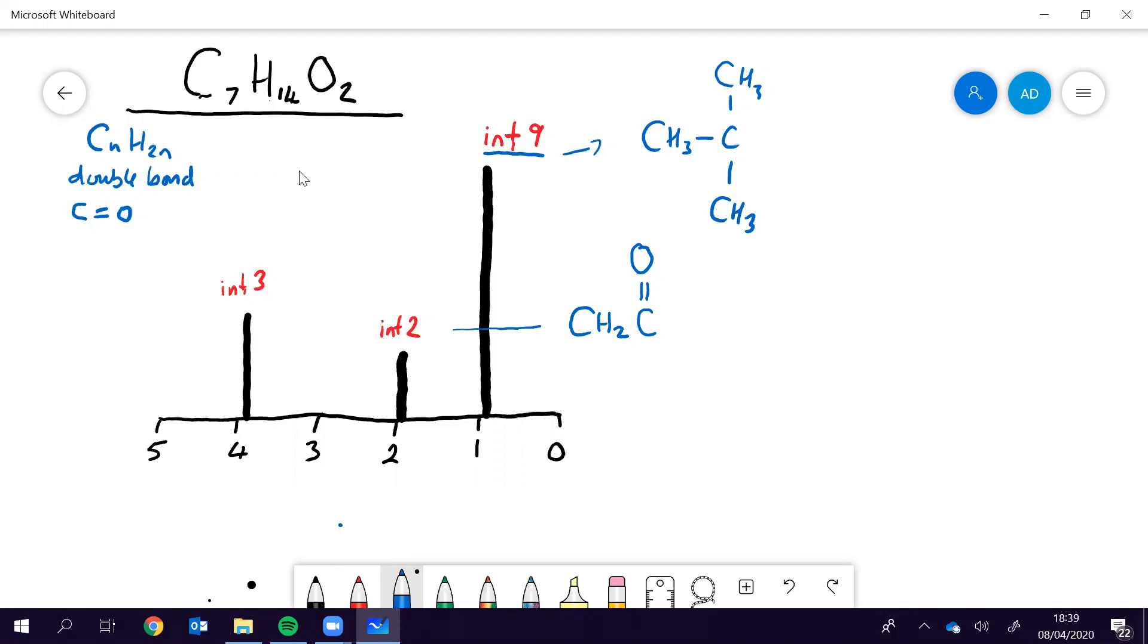Okay, this one with an integrated value of three, this one here, well, this is going to be a CH3. It's probably not next to a carbonyl because it's got a PPM of four, and so it is probably next to an oxygen.